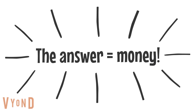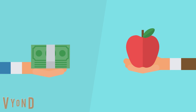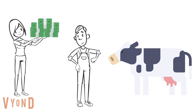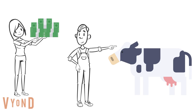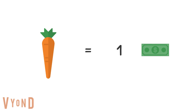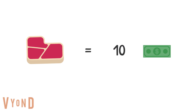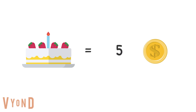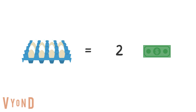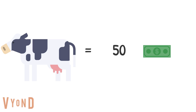The answer is money. Money is something everyone recognises has value, so it can be swapped for different things. Mary can swap her carrots for money and then save up her money to buy the cow. Carrots, steak, eggs, cakes, and cookies are all given a monetary value — for example, one coin or ten notes.